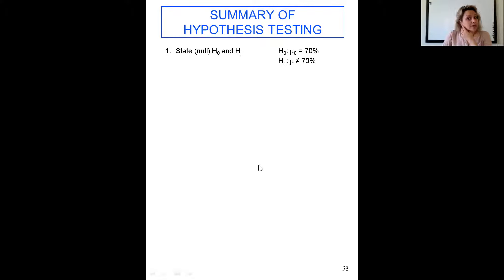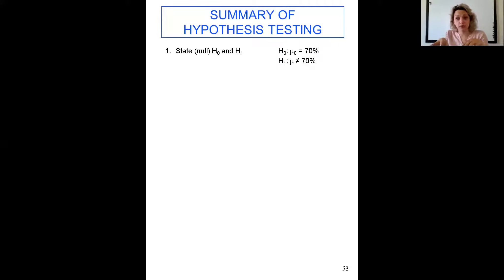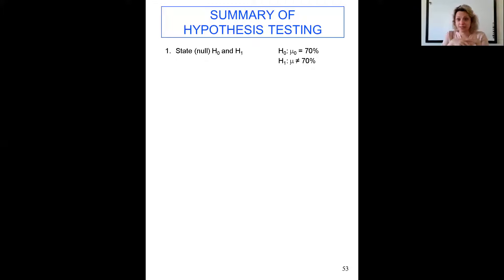The first step is to state the null hypothesis. In second-year stats, the first step was to define or identify your parameter of interest, but here we assume you already know that. You should be able to look at an example and identify whether the parameter is mu, sigma, or a proportion. Also be careful to determine if you are dealing with one sample or more than one sample, because the test statistic will be different.